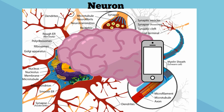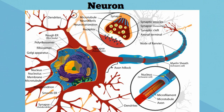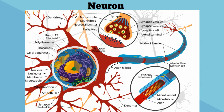A neuron has several parts. First, they have a cell body. The cell body contains the nucleus and other organelles like the mitochondria and ribosomes.